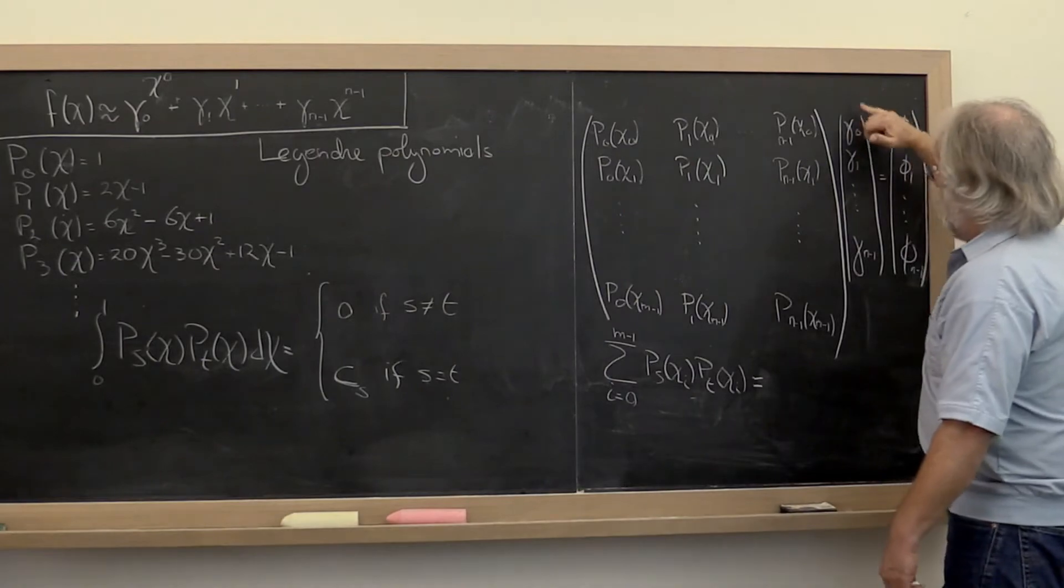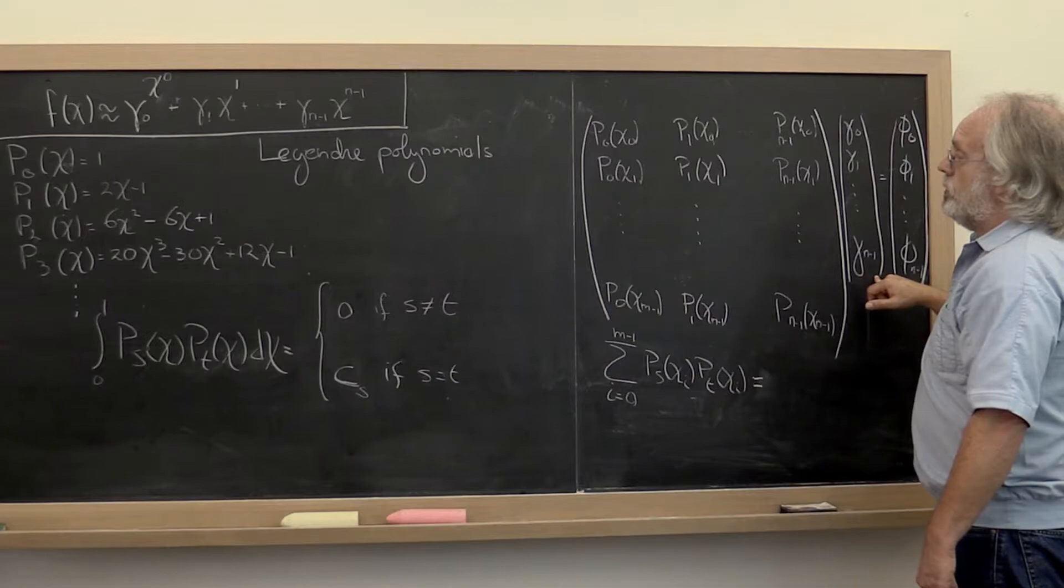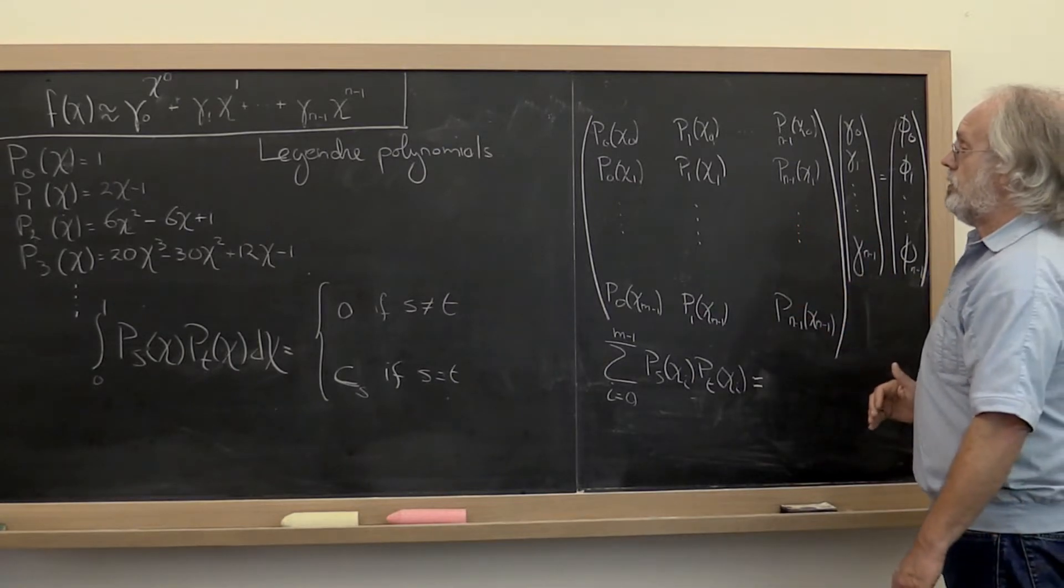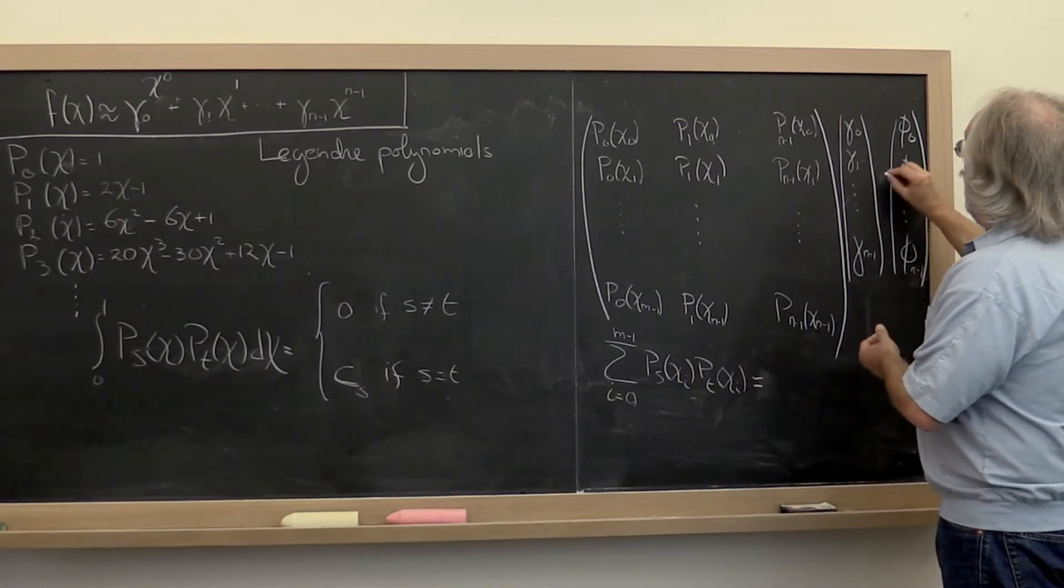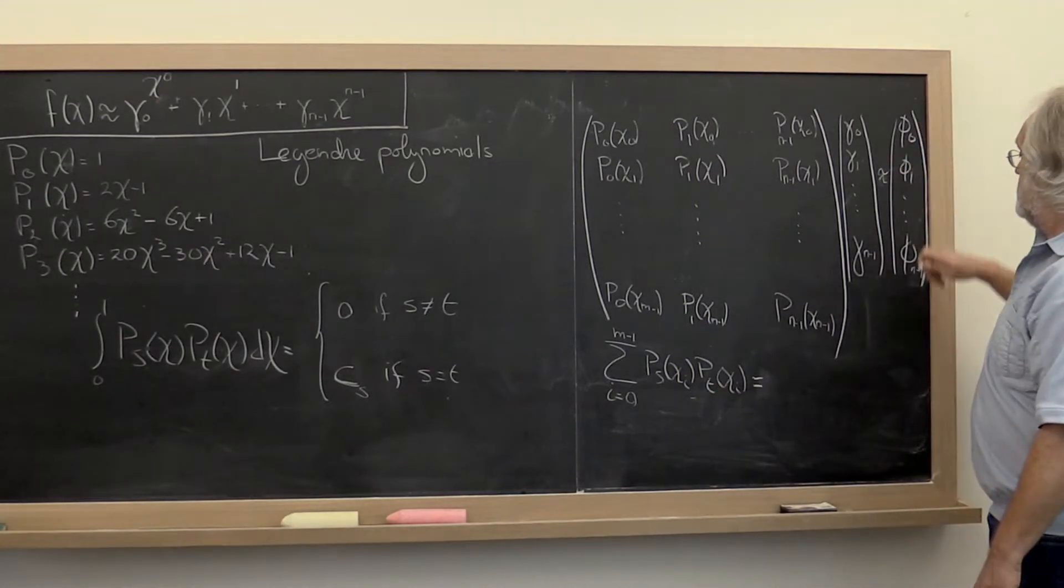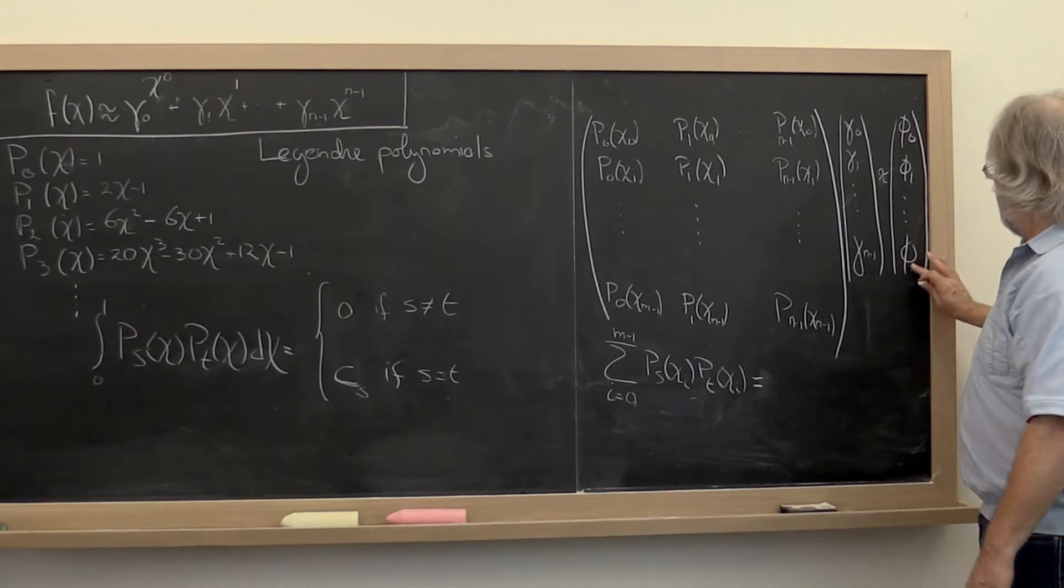And then multiplying that times the vector that now becomes the coefficients with which you take a linear combination of these columns. You would like for that to be approximately equal to phi 0 through phi n minus 1.